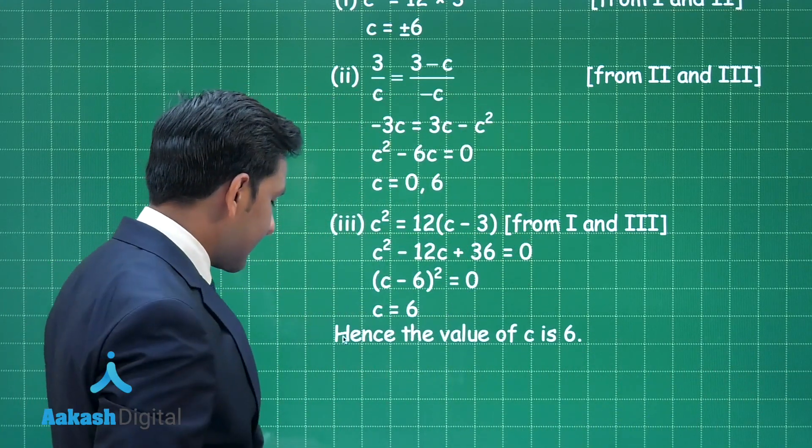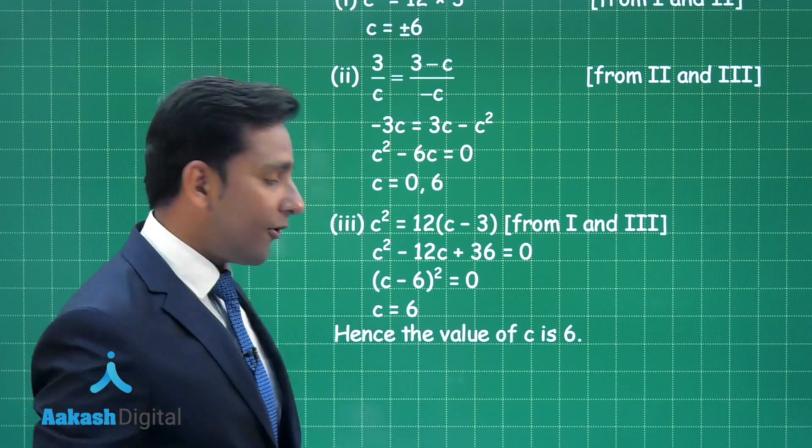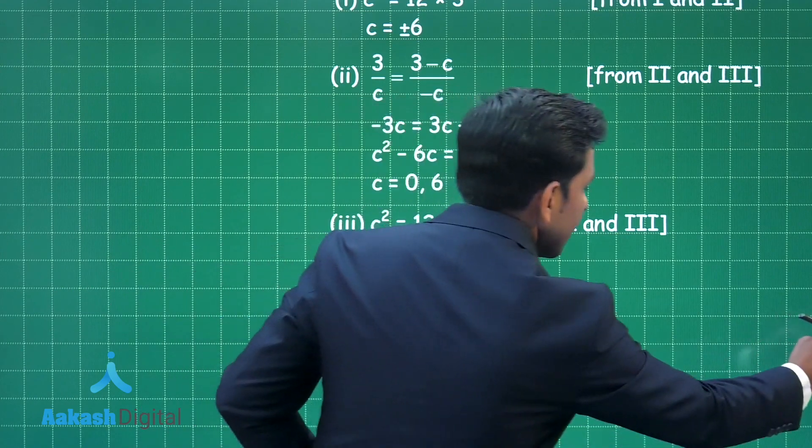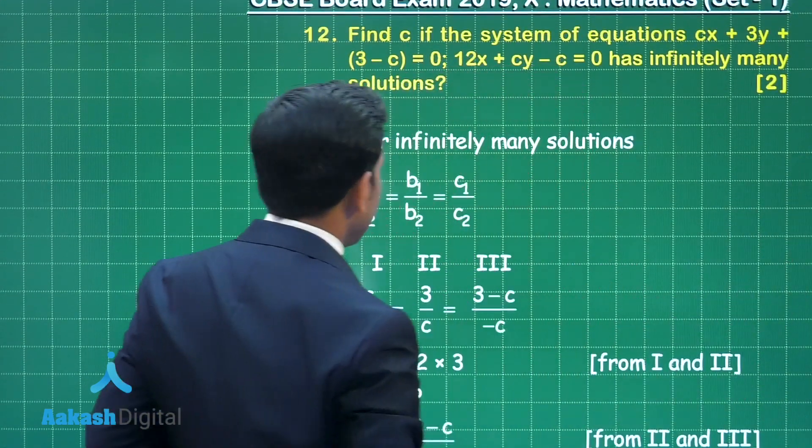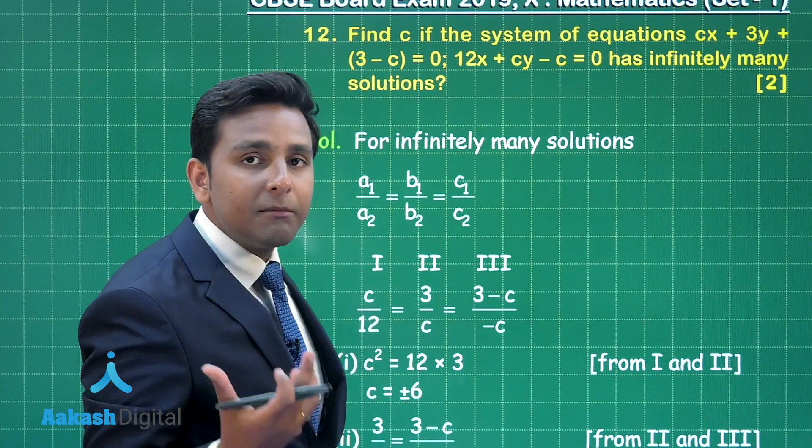That means this is the answer for this question, so you can write C is equal to 6, and this is the solution of this question. Now let us discuss the marking scheme of this question.